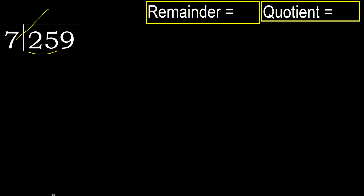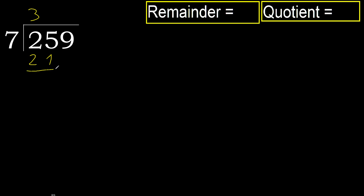But not greater: 7 multiplied by 4 is 28 — 28 is greater. So 7 multiplied by 3 is 21. 21 is not greater, so subtract. Next: 25 minus 21 equals 4.